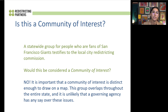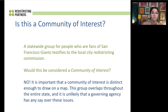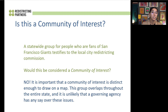The fourth example goes in a different direction: a statewide group of fans of the San Francisco Giants testifies to the local city redistricting commission. Would this be considered a community of interest? No, it does not. It's important that a community of interest is distinct enough to draw on a map. This group overlaps throughout the entire state and it is unlikely that a governing agency has any say over these issues. However, if a local adult recreation baseball league came forward requesting more lights at the baseball park or a water fountain, that could make sense as a community of interest for Redwood City's redistricting process.